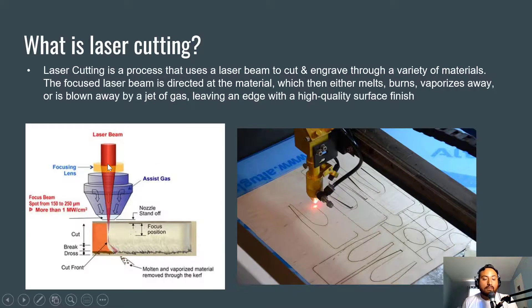On the left side, we have a graphic explaining how the laser beam works and the essential components that a laser beam has. Typically, most laser beams have a focusing lens—this is where the assistive gas comes in that I mentioned earlier—and then this is your material type.